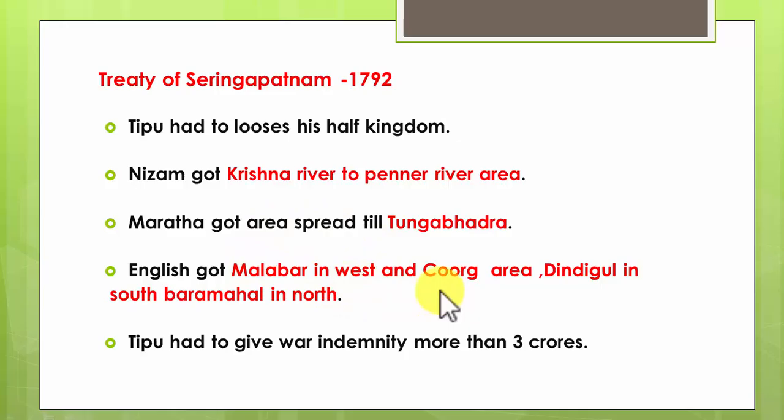As promised to the Nizam and Marathas, they received their share of war booty: the Nizam got the area from the Krishna river to the Pane river, the Marathas got the area up to the Tungabhadra, and the English got Malabar in the west, Coorg, Dindigul in the south, and Baramahal in the north. Tipu also had to pay a war indemnity of more than three crores.